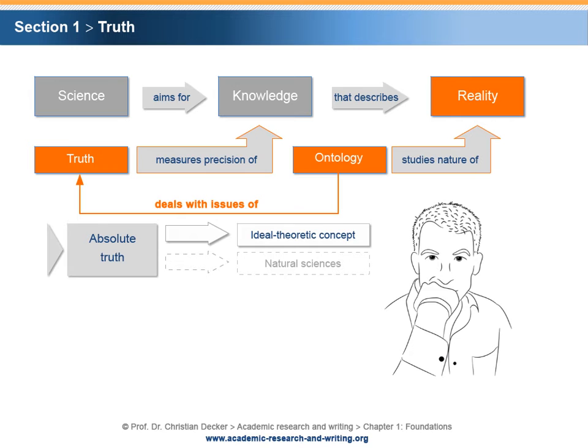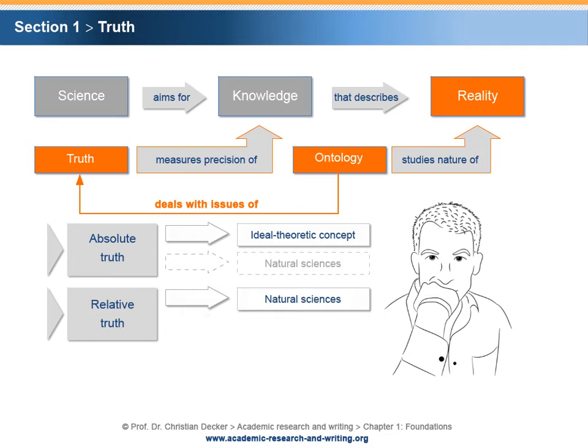In an imperfect world, scientists can only aim for relative truth. Due to their character, natural sciences are in a good position to aim for relative truth. As a result of the complex character of their research problems, social sciences face considerable obstacles while aiming for relative truth.